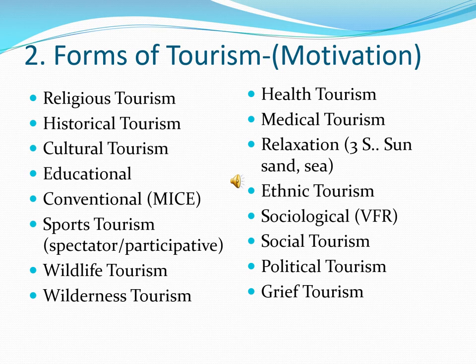Sports tourism is the movement of people from one place to another for either participating in sports or going as spectators. People going to watch Wimbledon is sports tourism. People going to participate in the Olympics is sports tourism. When people go to watch events, it is spectator sports tourism; when people move to participate in sports events, it becomes participative sports tourism.